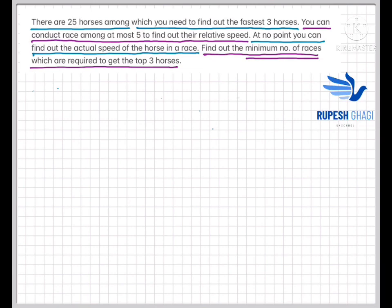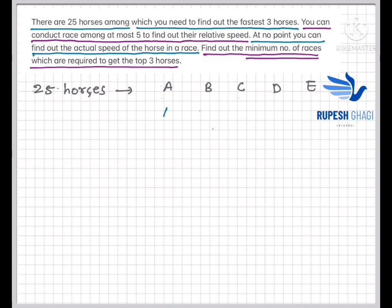Let's solve this. There are 25 horses and you can put at most five in a race at once. The intuitive first thought is to group the horses into groups of five, giving us five groups. Let's name them A, B, C, D, and E. There are five horses in group A — let's race them and find the order. Let's say A1 is the fastest, then A2, A3, A4, and A5. That's our first race.